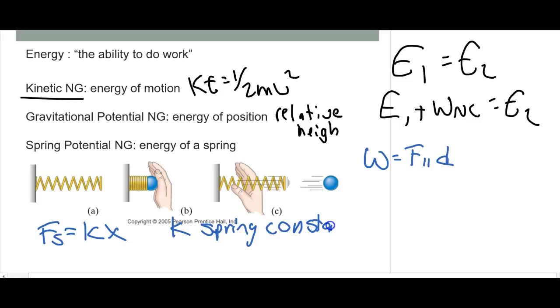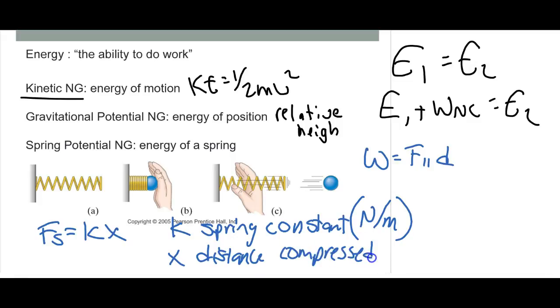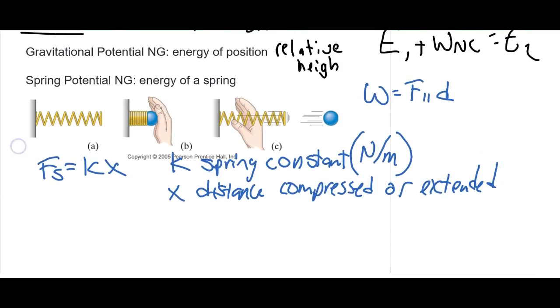And this is how strong a spring is. The units are in newtons per meter. So this tells me how many newtons it takes to compress it a meter. x is the distance compressed or extended from equilibrium.